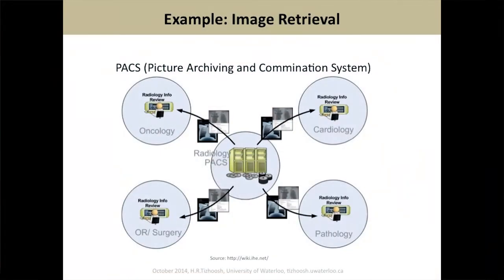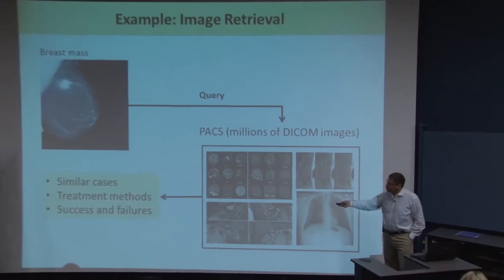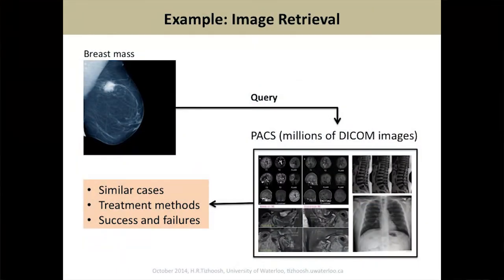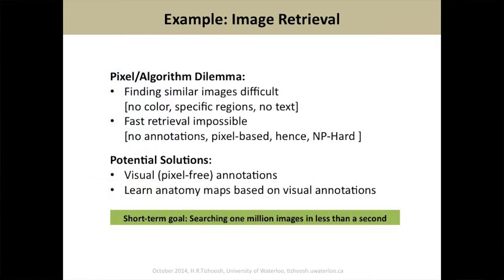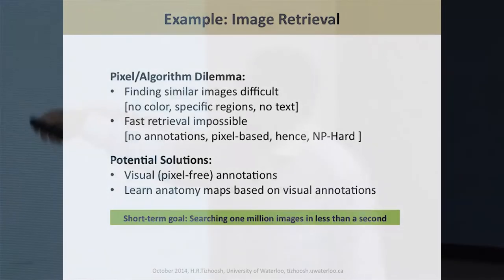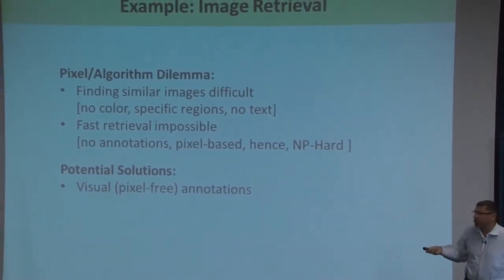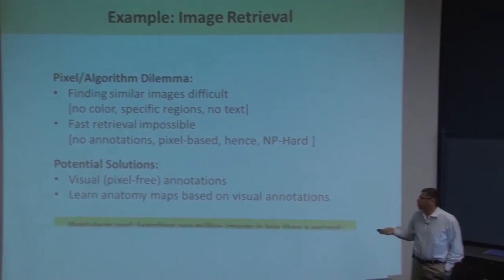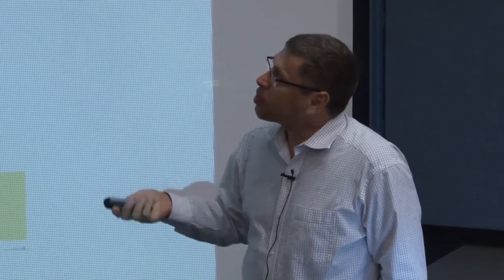Another problem is image retrieval. We have PACS for many different fields, and given a query you have to find something in a huge database — finding similar cases to evaluate treatment methods and their success. Finding similar images is very difficult, and fast retrieval is basically impossible — NP-hard, not doable even with a supercomputer. The potential solution requires visual annotations, since there are no text annotations for tumors and tissue types. The short-term goal: can you search one million images in less than a second, not by text but inside the images? These three problems are the major issues we are trying to deal with. Thank you.